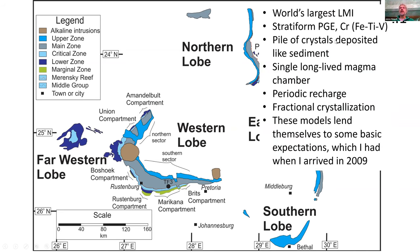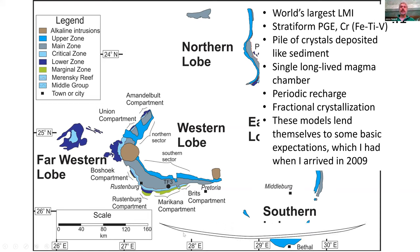The Bushveld is generally regarded as a pile of crystals deposited like sediments — either in situ like chemical sediments, or like classic sediments as a rain of crystals from above — within a single long-lived magma chamber that experienced periodic recharge events, after which it would go through periods of fractional crystallization. This kind of thinking lends itself to some basic expectations that I had when I arrived in 2009. It's actually a very thin sheet — about eight or nine kilometers thick, 400 kilometers wide, dipping more steeply at the edges and probably continuous through the middle.